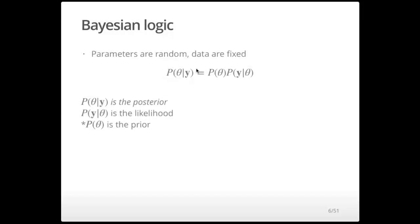The term on the left represents the probability of the parameters given our data — the posterior distribution. The first term on the right is the probability of the parameters, which is the prior probability of the parameter, and the second term is the likelihood — the probability of the data given the parameter. In the maximum likelihood framework, this is the only term we use. We need the prior to be included to express the probability of the parameters conditioned on the data.